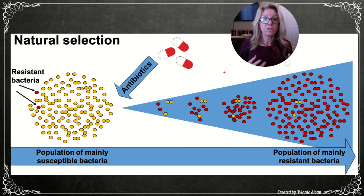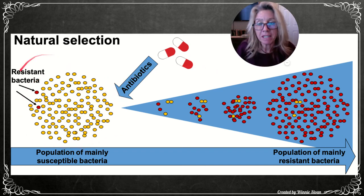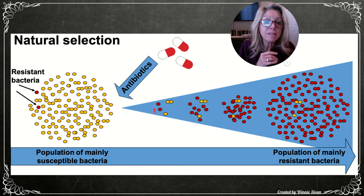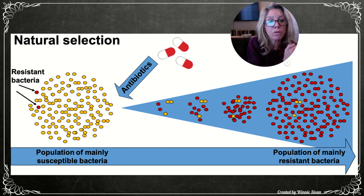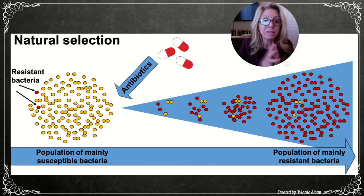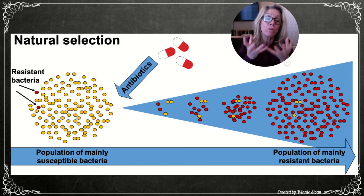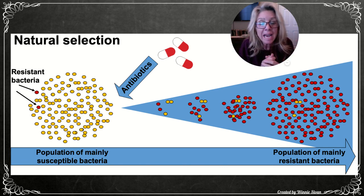Antibiotic resistance is a modern, observable example of natural selection. Antibiotics kill susceptible bacteria, but resistant bacteria survive and increase in number. Overuse of antibiotic products — lotions, creams, cutting boards — is killing off weak bacteria while resistant strains thrive. This is a serious societal concern: we may run out of effective antibiotics.